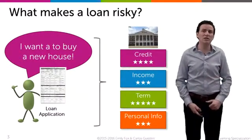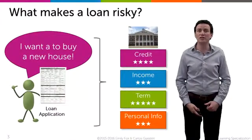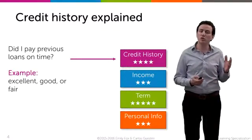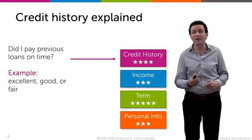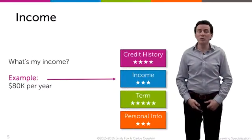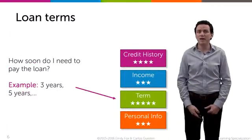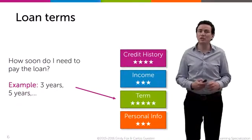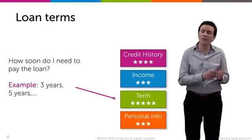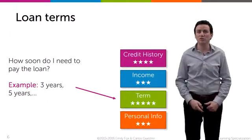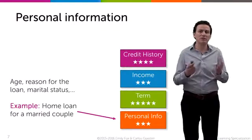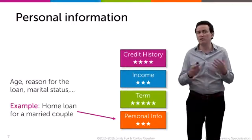Let me give you a little more detail on the kinds of things that people measure when making loan application decisions. Typically you look at credit history — all the other loans I've taken in the past, my credit cards, and whether I've paid those off on time. Then we look at my income, how much money I make today. You might also look at what's called the term of the loan, which maybe is three years, five years, 15 years, or 30 years — the period of time I'm going to take to pay back the loan. And finally, information about the individual, like age and whether I'm married.